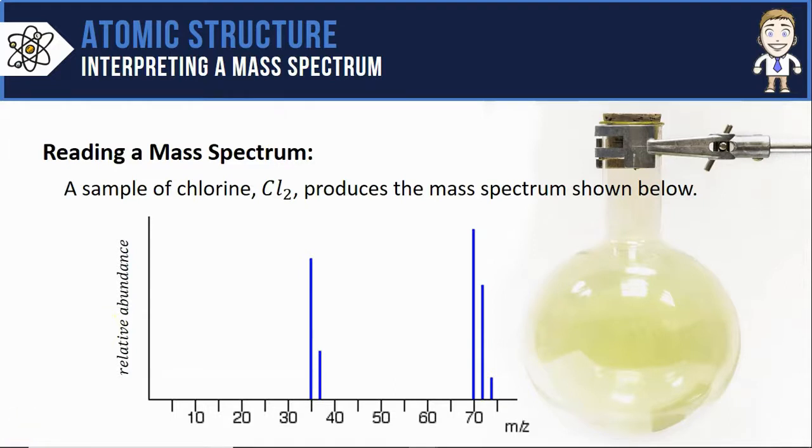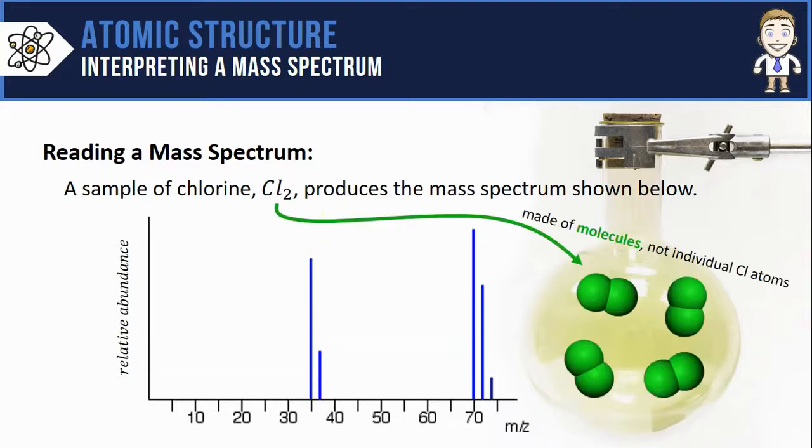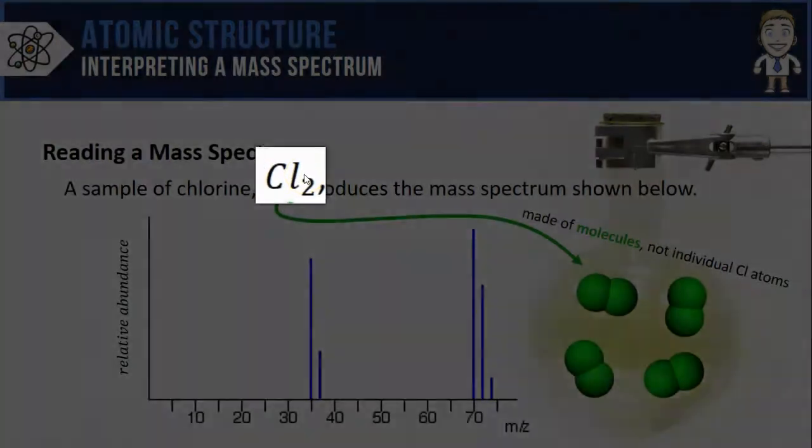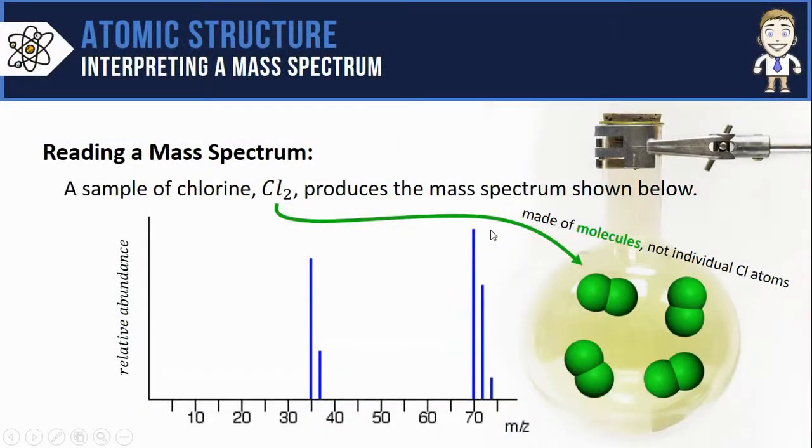The first thing to notice here with chlorine is that we're not actually testing chlorine atoms, because chlorine is a diatomic element which means it comes in the form of Cl2. So the masses that my mass spectrometer is testing and analyzing aren't the masses of individual chlorine atoms, those are the masses of Cl2 molecules.